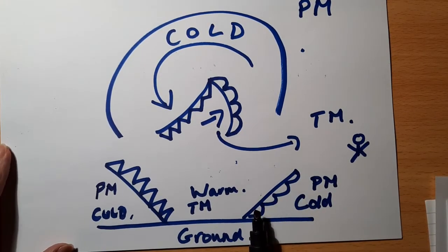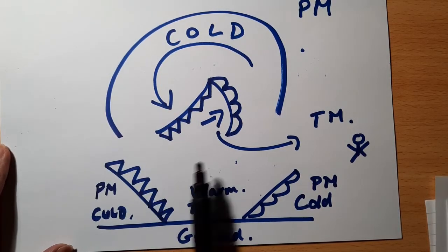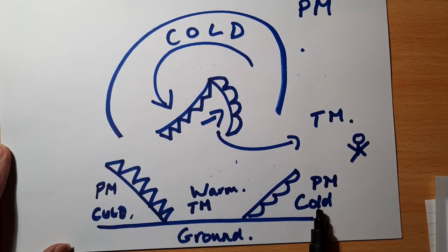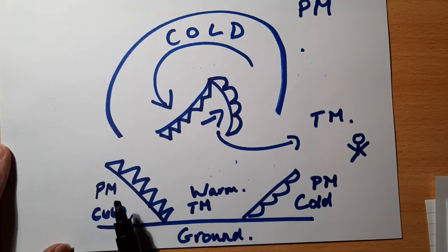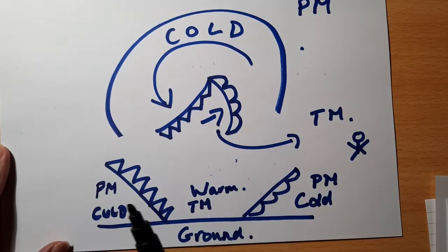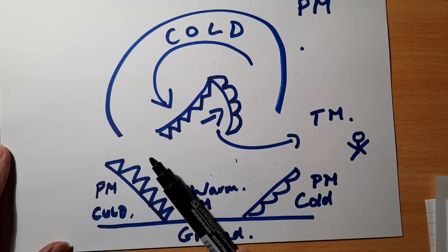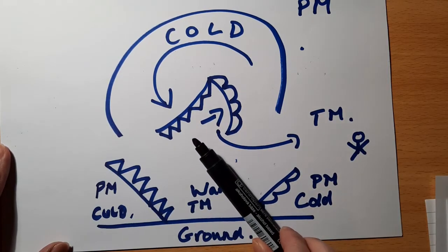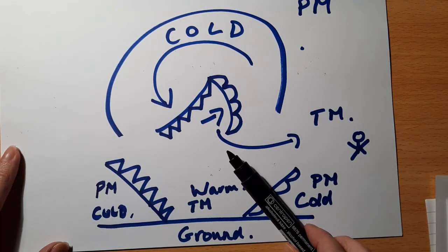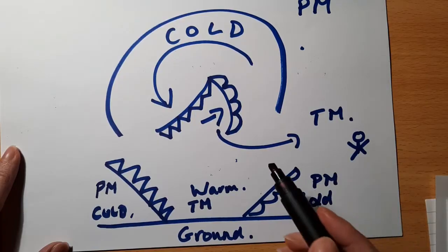To recap the cross-section: we have the warm front and the cold front, with warm air in the middle warm sector. At either side of the warm front and to the left of the cold front we have our cold air. The cold front catches up on the warm front until eventually the warm air starts to get smaller and smaller in size, squeezed out and upwards.